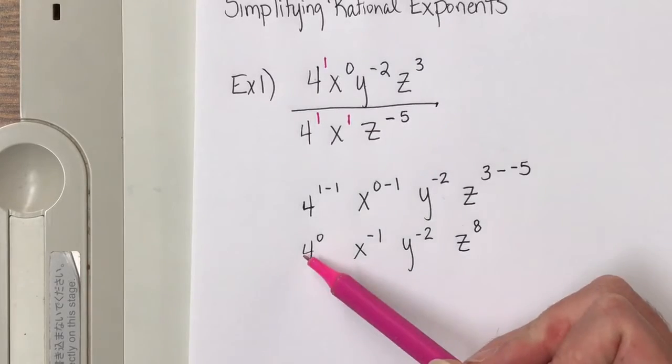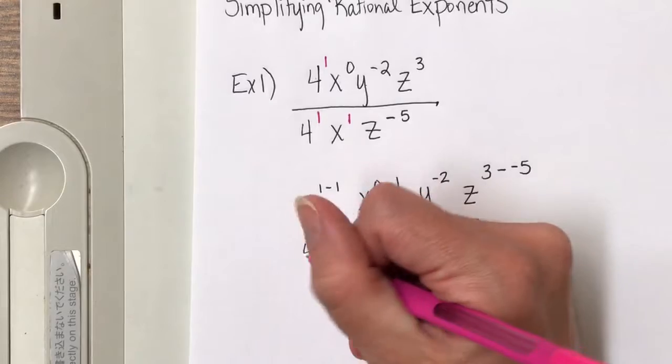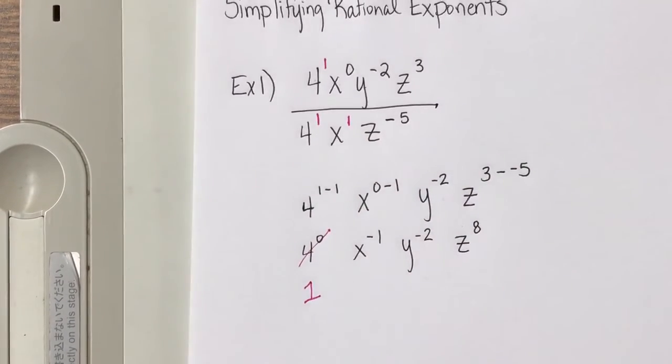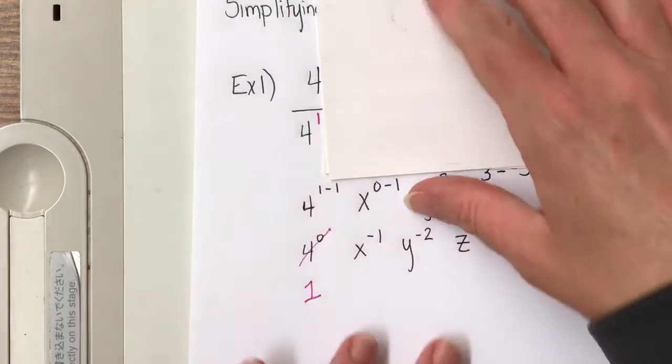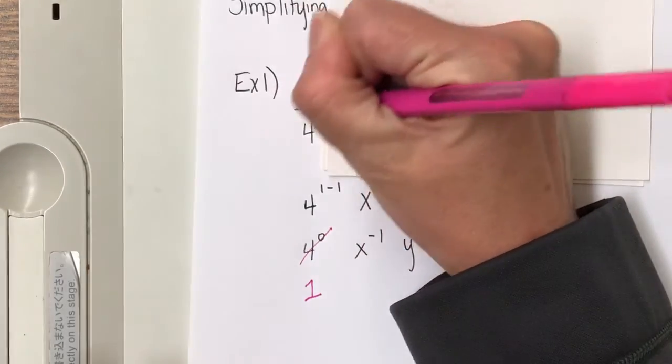We're not allowed to have negative exponents, and we also have a 0 exponent. We learned in our properties of exponents, anything to the 0 power has a value of 1. And if you go back up to the top and just use common sense, if all I have was 4 divided by 4, we know that 4 divided by 4 is 1. So we could have started off and just canceled those two out to start with.